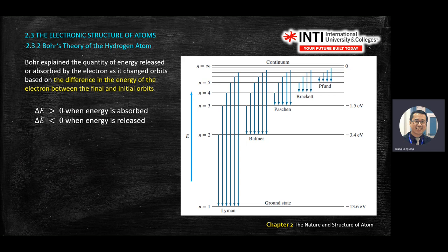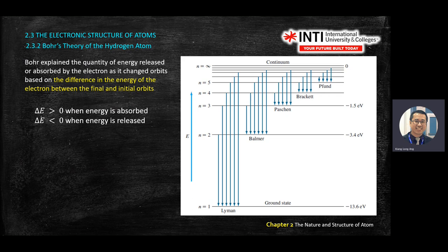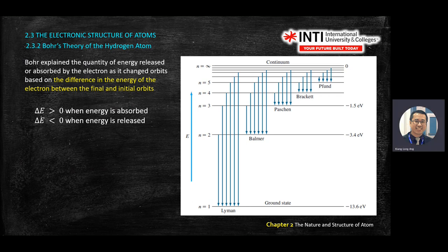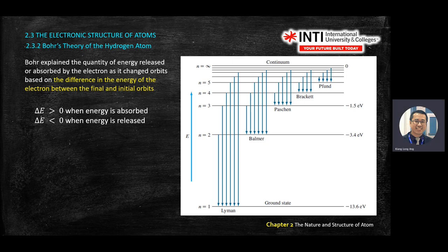How do we judge whether energy is absorbed or released? If the change in energy (ΔE) is positive, energy is absorbed. If ΔE is negative, energy is released. Think of it this way: if your electron is at orbit n=2 and you want to move it to n=3, you give it energy (absorbed). To pull it back from n=3 to n=2, it loses energy (released) - like moving from the outer highway lane to the inner lane by releasing the accelerator.